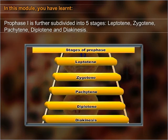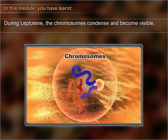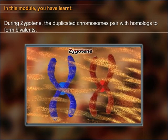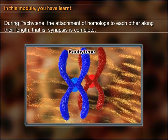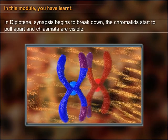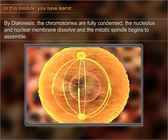Prophase one is further subdivided into five stages: leptotene, zygotene, pachytene, diplotene, and diakinesis. During leptotene, the chromosomes condense and become visible. During zygotene, the duplicated chromosomes pair with homologs to form bivalents. During pachytene, the synapsis of homologs along their length is complete. In diplotene, synapsis begins to break down and the chromatids start to pull apart, and chiasmata become visible.